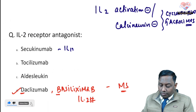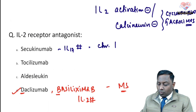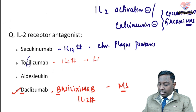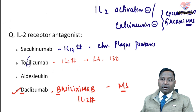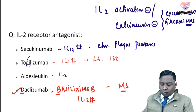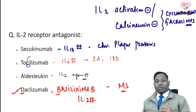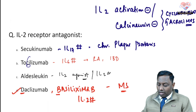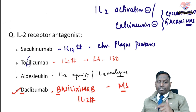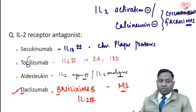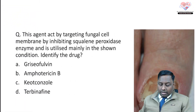Daclizumab is the IL-2 receptor antagonist. Secukinumab is an interleukin-17 antagonist used for chronic plaque psoriasis. Tocilizumab is an interleukin-6 antagonist used for rheumatoid arthritis, inflammatory bowel disease, and other conditions requiring immunomodulation. Aldesleukin, on the other hand, is an IL-2 agonist or analog — it is given in therapy for conditions like renal cell carcinoma to induce immune responses.